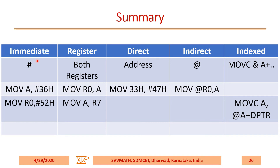Summary: in immediate addressing, the hash symbol will always be present. Whenever you find '#', it is immediate addressing. In register addressing, you will find registers as part of the instruction. When it is direct addressing, you will find addresses. In indirect addressing, you will find the '@' symbol — for example, MOV @R0 or @R1. For indexed addressing, you will find MOVC. These are the addressing modes in brief.